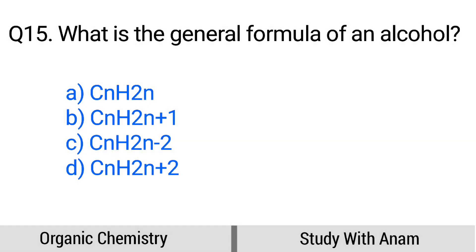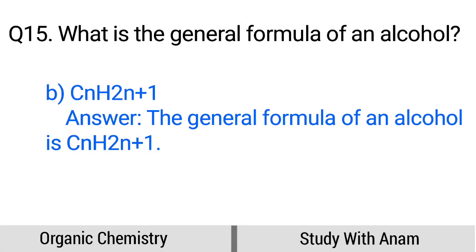Question number 15. What is the general formula of an alcohol? Option A: CnH2n, B: CnH2n+1, C: CnH2n-2, D: CnH2n+2. The correct option is option B, CnH2n+1. The general formula of an alcohol is CnH2n+1 (with an -OH group).